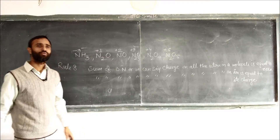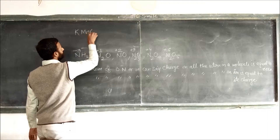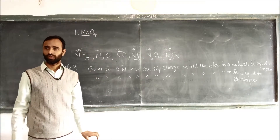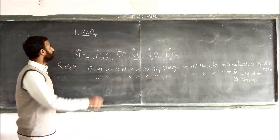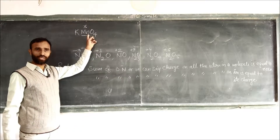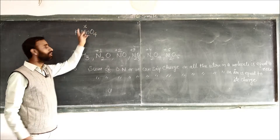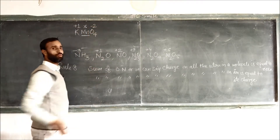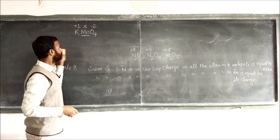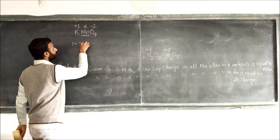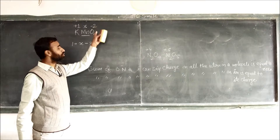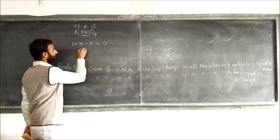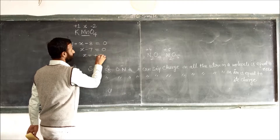Now let us discuss. What is the oxidation number of manganese in KMnO4? Potassium has plus one, oxygen has minus two. So we write: 1 plus x plus (minus 2) times 4 equals zero. That gives 1 plus x minus 8 equals zero, so x minus 7 equals zero, meaning x is plus 7. The oxidation number of manganese in KMnO4 is plus 7.